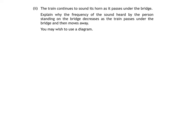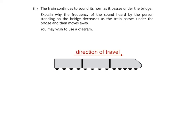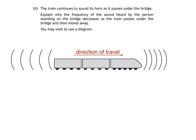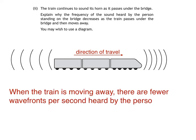You may wish to use a diagram. If we draw one, we start with the train itself, which is moving forward. The motion of the train causes the wavefronts to bunch up at the front of the train and space out at the back. As the train approaches you, you hear a higher frequency because the train travels a short distance towards you in the time that successive wavefronts are emitted. As the train moves away, you hear a lower frequency, as each successive wavefront is emitted from a greater distance than the last. When the train is moving away, there are fewer wavefronts per second heard by the person on the bridge, explaining why they hear a lower frequency.